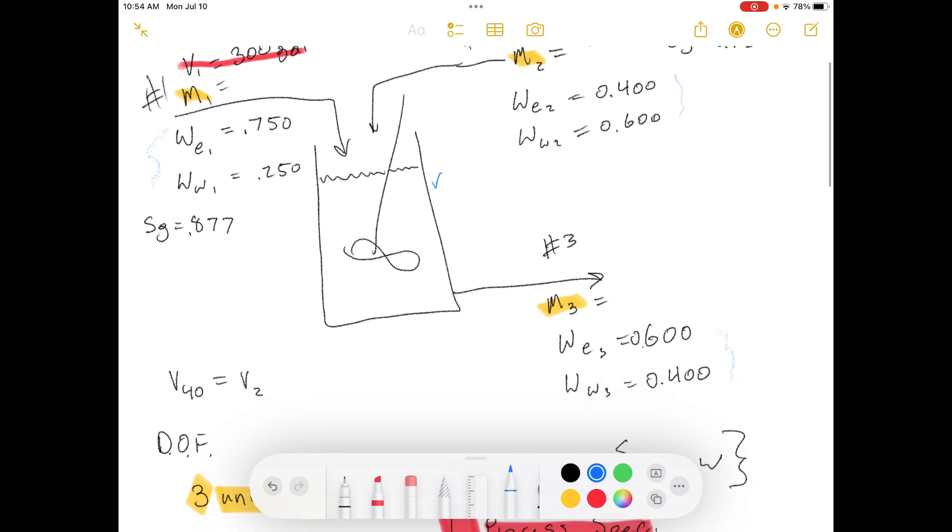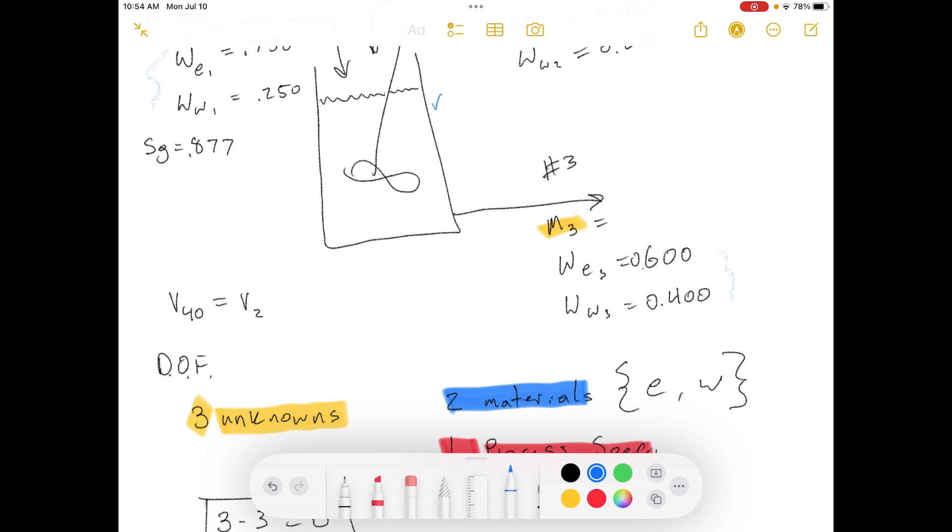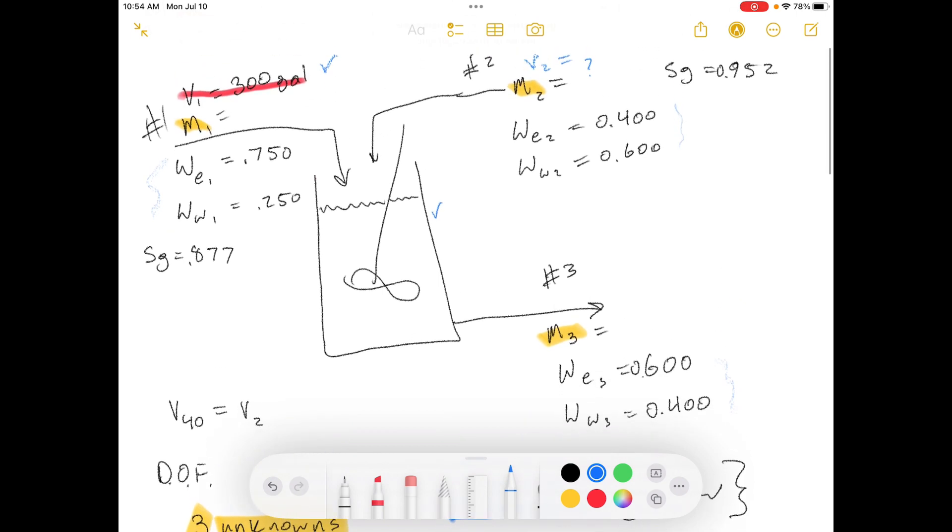Now to do the degree of freedom analysis, we know that we've got three unknowns. I've highlighted each of the unknowns here: mass one, mass two, and mass three.